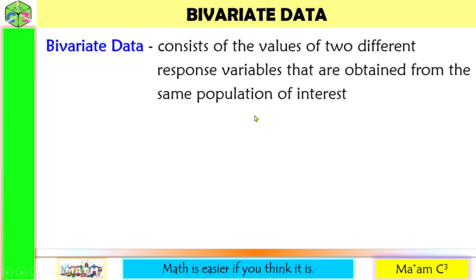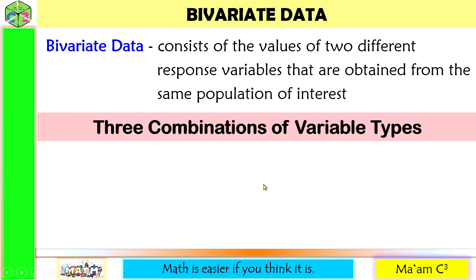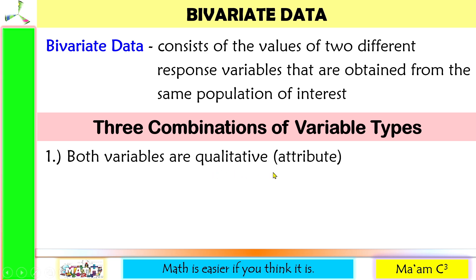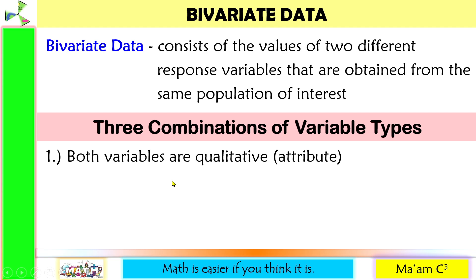There are three possible combinations of variables. One is if both variables are qualitative — meaning they describe an attribute. For example, one variable is the sex (male or female), and another variable is the modality of learning: online, modular, or blended.